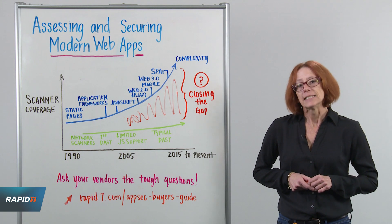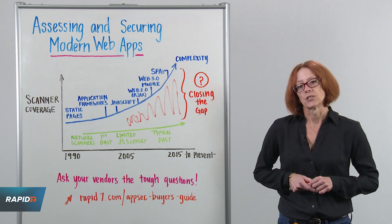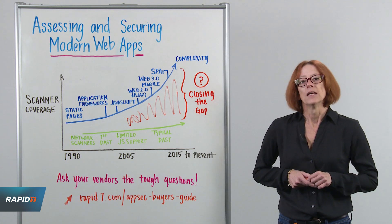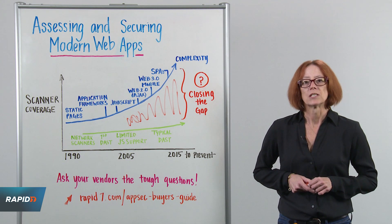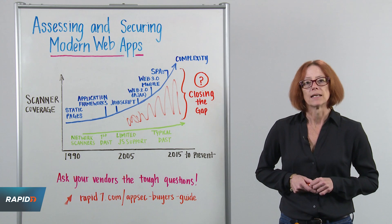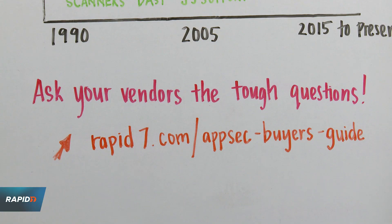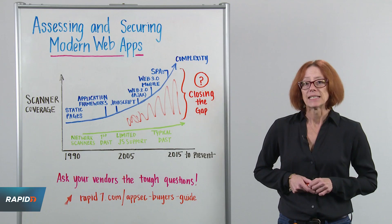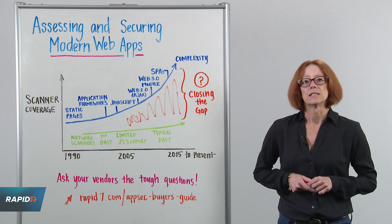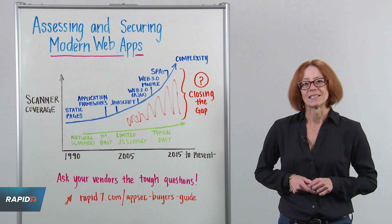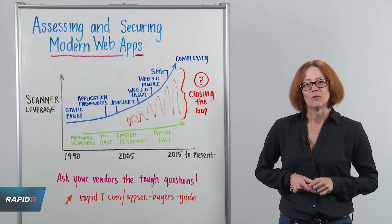And continue to ask the questions. If you need help figuring out which questions you should be asking, consider looking at Rapid7's Application Security Buyer's Guide. And that's it for this week's Whiteboard Wednesday. We'll look forward to seeing you next week.